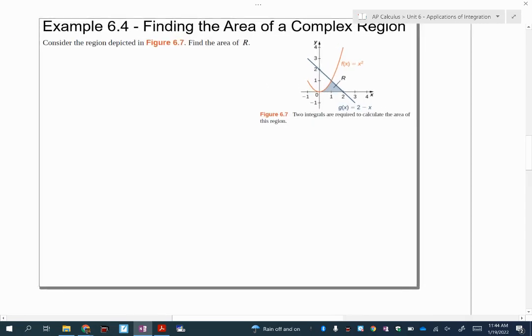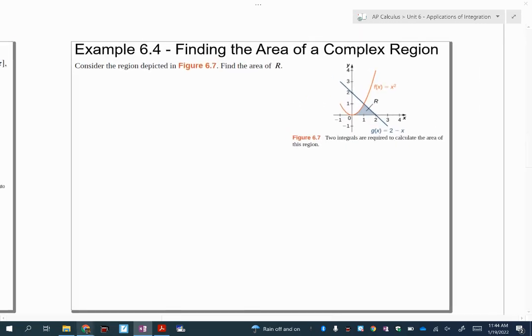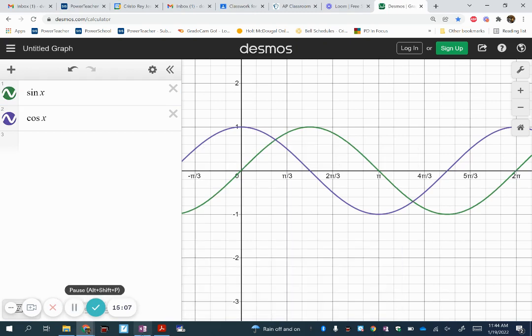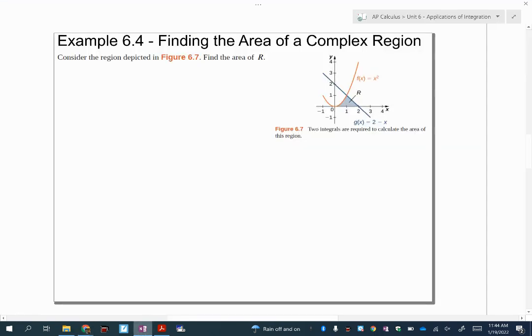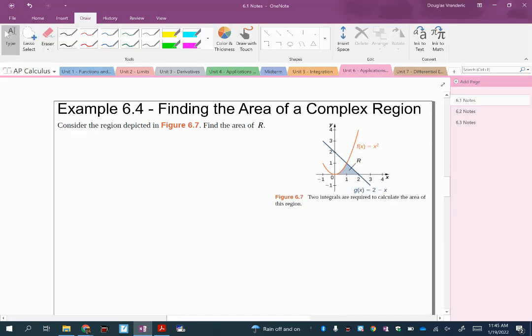Okay, I'm going to move into finding the area between a complex region. So for this one, if you look at the sketch that's given to us, you'll notice that we have the area that kind of looks like a triangle, and it really looks like two main areas here that I can split it up into.